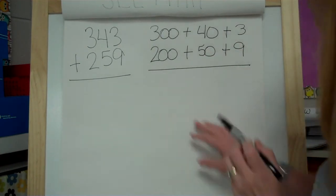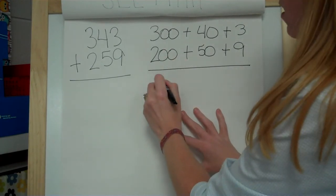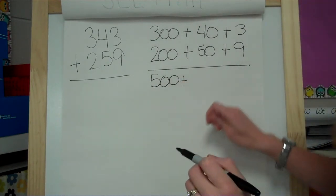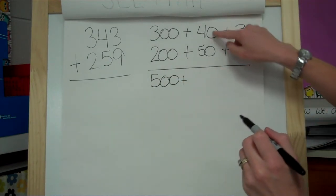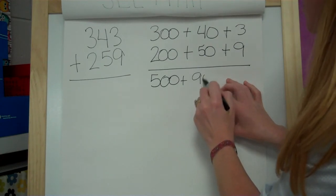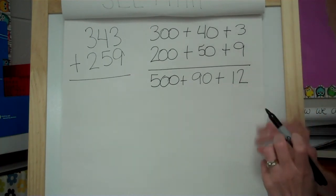And then I can add those up. So 300 plus 200 would be 500. Trying to pause there so you can think about that one. 40 plus 50 would be 90. And then 9 plus 3 is 12.